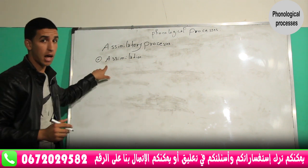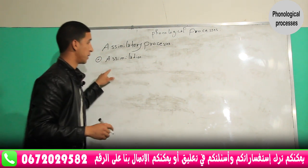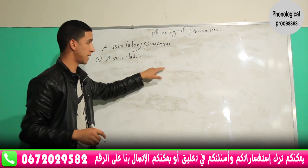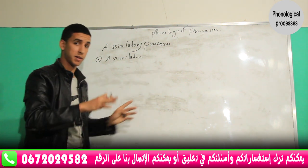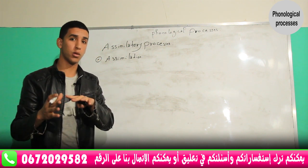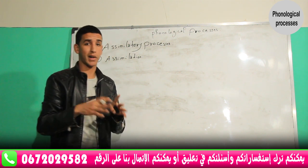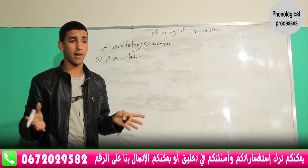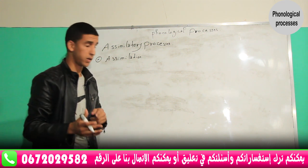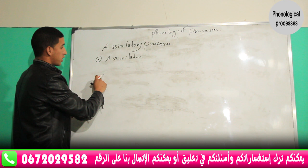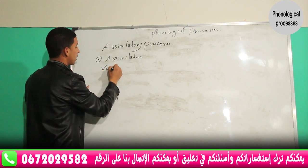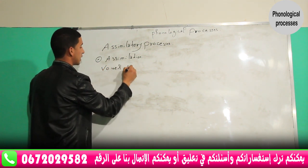Assimilation is common in languages. Adjacent segments become more alike — one segment takes the value of another segment. For example, a vowel takes the value of a consonant, or a consonant takes the value of a vowel, and vice versa. In assimilation we have vowel harmony.